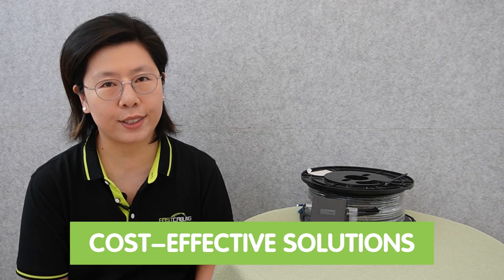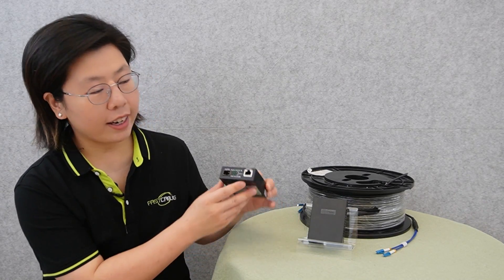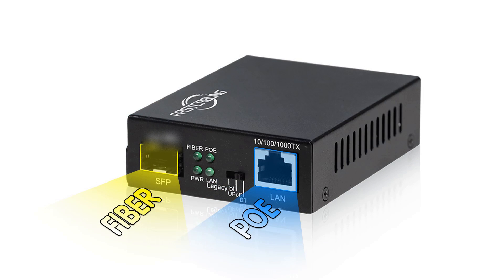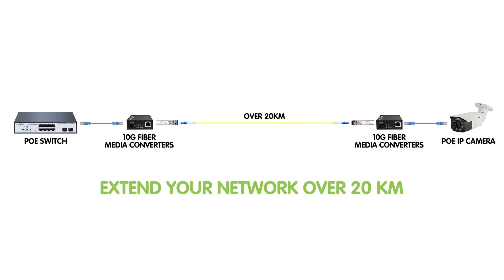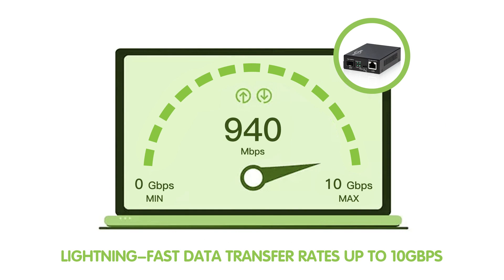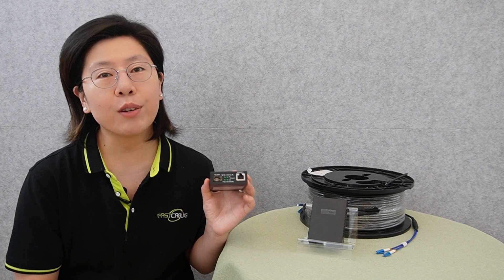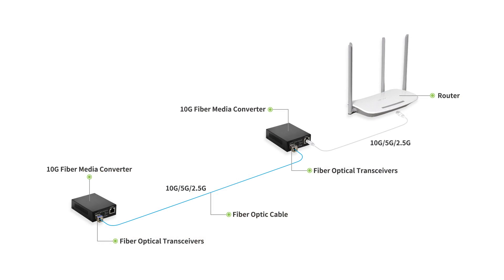Lastly, 10G fiber media converters provide cost-effective solutions for network upgrades. This compact size 10G fiber media converter provides a cost-effective solution to connect Ethernet devices over a fiber backbone and easily extend your network over 20km at lightning-fast data transfer rates of up to 10Gbps over single-mode fiber, which is ideal for point-to-point links.